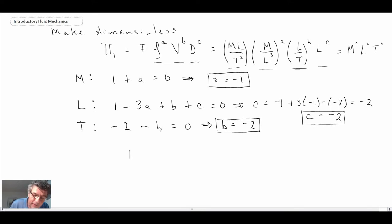The pi group, pi one, the one with the force, turns out to be the following. We have force, and then density is to the power minus one, so we have density in the denominator. Velocity is to the minus two, so we have velocity squared in the denominator. And the diameter is raised to the power minus two, so we have D squared. That's what we get for our pi one group. We'll check that, but that should be dimensionless.